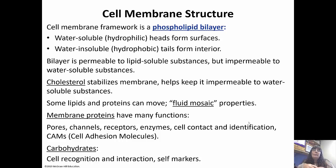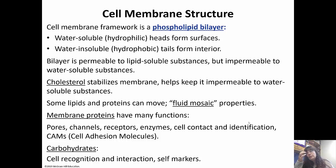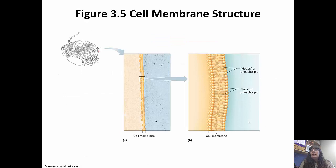The immune system can recognize which cells are self and which are foreign, so it knows what to attack. Cell adhesion molecules help things adhere. Carbohydrates hang off some of those membrane proteins — those are glycoproteins and glycolipids — and they function in cell recognition and interaction. They act as self-markers so the immune system can recognize self-cells versus foreign cells with different markers.